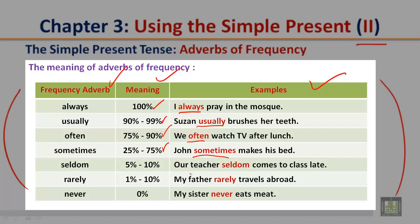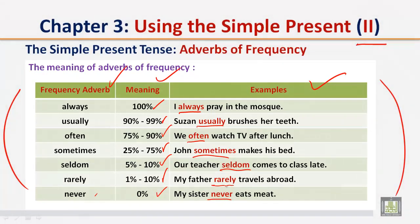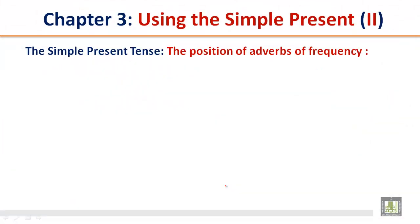The frequency adverb 'seldom' means 5 to 10%. Our teacher seldom comes to class late. The next frequency adverb 'rarely' means 1 to 10%. My father rarely travels abroad. And the last frequency adverb, 'never', means 0%. My sister never eats meat.